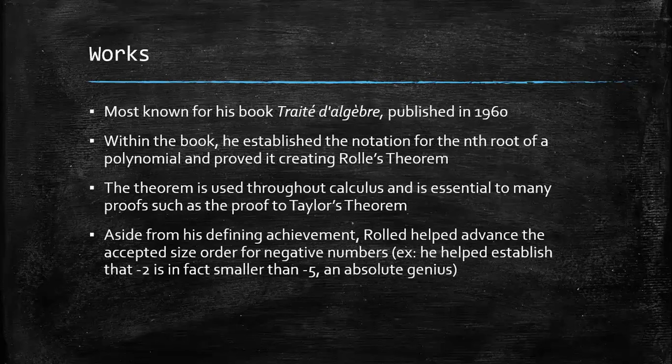Although Rolle mainly studied in algebra and Diophantine analysis, he is most known for his work, Traité d'Algèbre, a book on the algebra of equations, published in 1690. Within the book, Rolle established the notation for the nth root of a polynomial and essentially created Rolle's theorem with the proof of the polynomial version of his theorem.